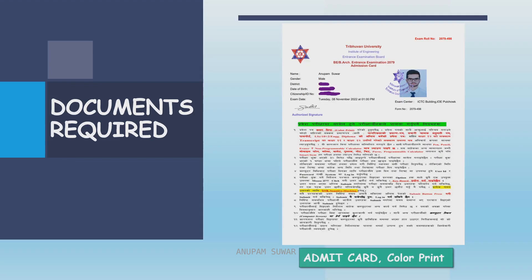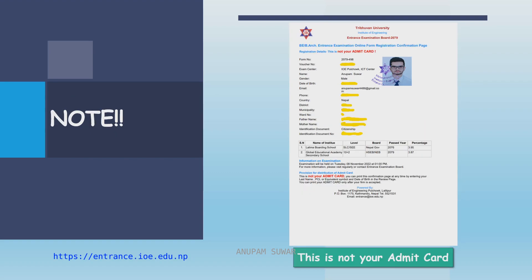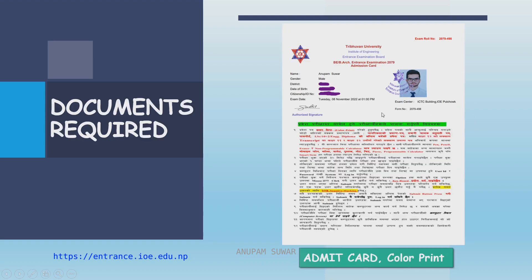One required document is the Admit Card, which must be a color print. You can find it at entrance.ioe.edu.np. You can download and print the Admit Card from that website. Note that certain documents are not your Admit Card — the actual Admit Card is available on the official website.